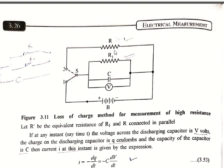In this method, the capacitor is first charged by means of a battery to some suitable voltage by putting the switch S to position 1, and then allowed to discharge through the resistance R and R1 by throwing the switch to position 2. The time T taken for the potential difference to fall from V1 to V2 during this discharge is observed by a stopwatch.